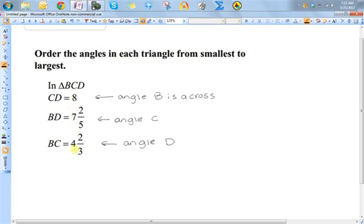So whichever of these sides is the smallest, the angle across from it will be the smallest angle. Whichever of these sides is the largest, the angle across from it will be the largest. So if I wanted to order these from smallest to largest, I just need to order these sides from smallest to largest.